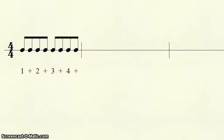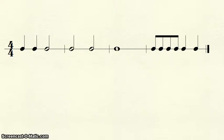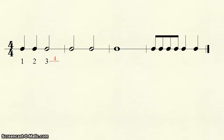Let's do an example of adding counting to an exercise. Here we have four measures of four-four time. The first beat of any measure must be one. Since it is a quarter note, we are done. The second note is also a quarter note, and we put a two. The next note is a half note, so we put a three and a line. Half notes receive two beats, so we put four on the line.